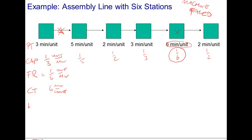Next, we can compute the idle time at each of the resources as a difference between the cycle time and the processing time. That would be three minutes here, one minute here, four minutes here, three minutes here, zero minutes here, and four minutes here. We'll then define the labor content as the sum of the processing times, which is three plus five plus two plus three plus six plus two, which makes a total of 21 minutes per unit.